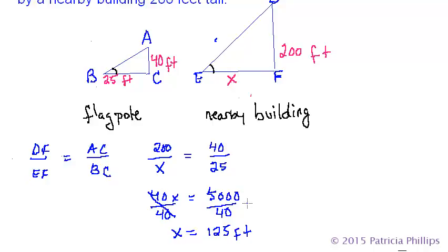So hopefully you can see now how you identify congruent angles, determine whether two triangles are similar, and then use proportions to find the missing side.